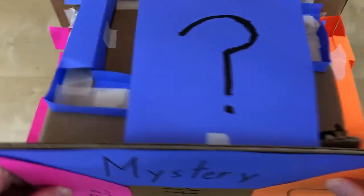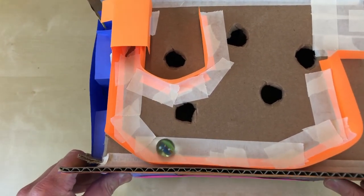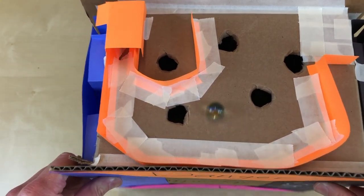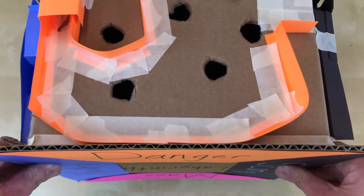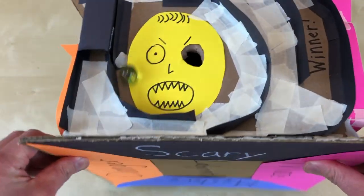The next side would be mystery themed, where certain parts of the maze would be hidden, so the player would have to guess their way through the maze. The next side of the box would be danger, where they would have to navigate their way around many holes that the marble could fall into. And the last side would be scary, where there would be just one hole, but if the marble falls in, it goes into a paper trap inside the box and never comes back.